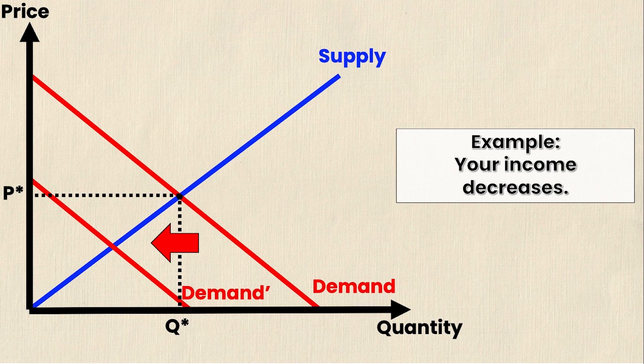Now what do you notice about the new intersection — or the new equilibrium — of the old supply curve and the new demand curve? You'll notice that price goes down from P star to P prime and it intersects at a new equilibrium right here. You'll also notice that Q star decreases to Q prime and intersects at an equilibrium right here.